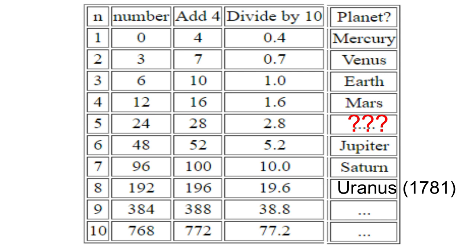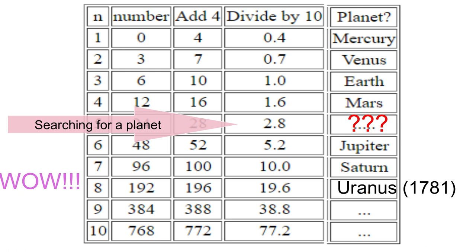Surprise, surprise! Uranus was found at the distance predicted by Bode's law. So people started to rave about how correct Bode's law was. Since the law predicted the existence of a planet at 2.8, people started to search the 2.8 areas to look for a planet.